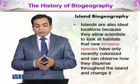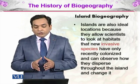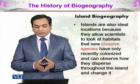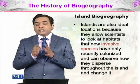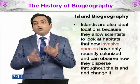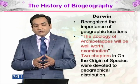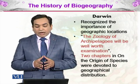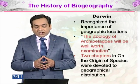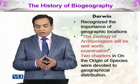There is also island biogeography, which we will discuss in detail. Islands are ideal locations because they allow scientists to observe habitats that new invasive species have only recently colonized and to see how they disperse throughout the island and change it. Islands serve as a miniature version of biogeography, helping us understand how biogeography works. Darwin recognized the importance of geographic locations and commented in his journal that the zoology of archipelagos would be well worth examination, which he eventually pursued, developing the theory of evolution by natural selection.